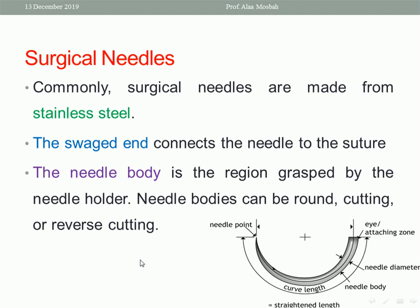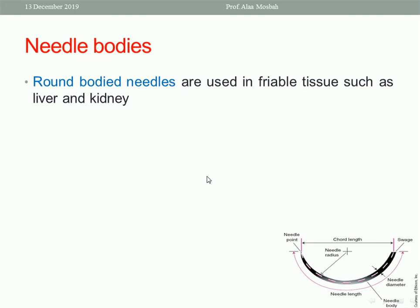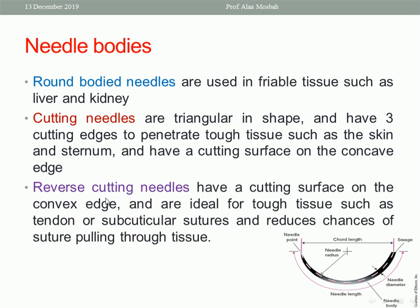Round bodied needles are used in friable tissue such as liver and kidney. Cutting needles are triangular in shape and have three cutting edges to penetrate tough tissue such as skin or sternum; they have a cutting surface on the concave edge. Reverse cutting needles have the cutting surface on the convex edge and are ideal for tough tissue such as tendon or subcuticular sutures, reducing the chances of suture pulling through tissue.